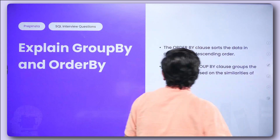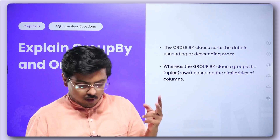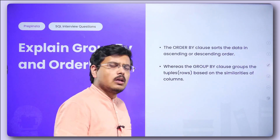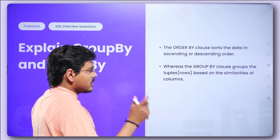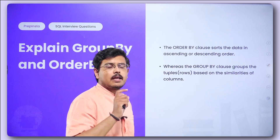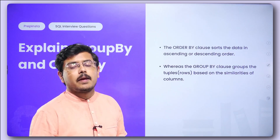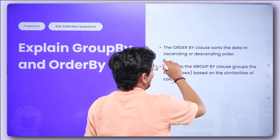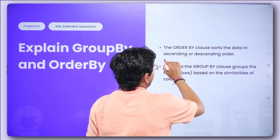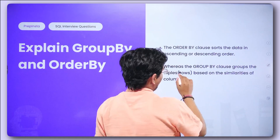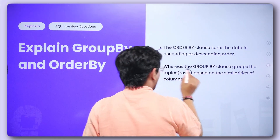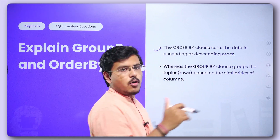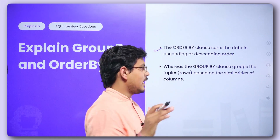There are two more widely used keywords: group by and order by. People often get confused between them, so it's a very commonly asked question. The order by clause sorts the data in ascending or descending order, whereas the group by clause groups rows based on the similarities of column values.